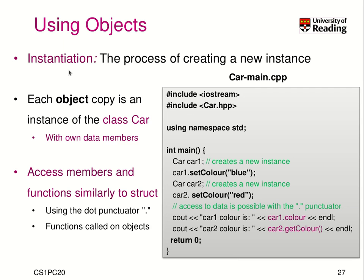When we use objects, we have to instantiate them. This is the process of creating a new instance of an object. In our case, each object is an instance of the class car with its own data members. So we have car1 and car2 — those are two different cars, two different variables of type car.